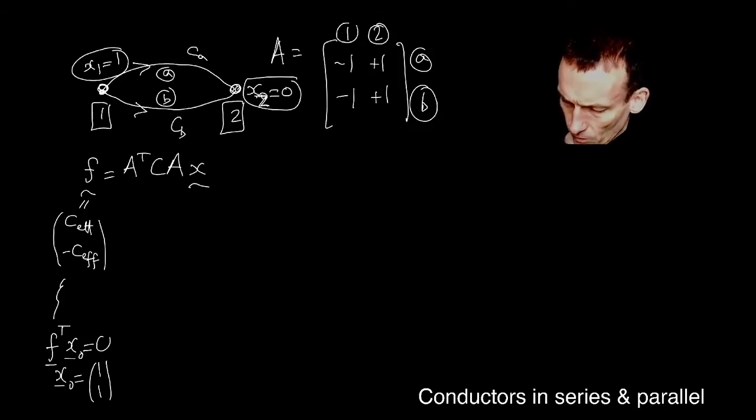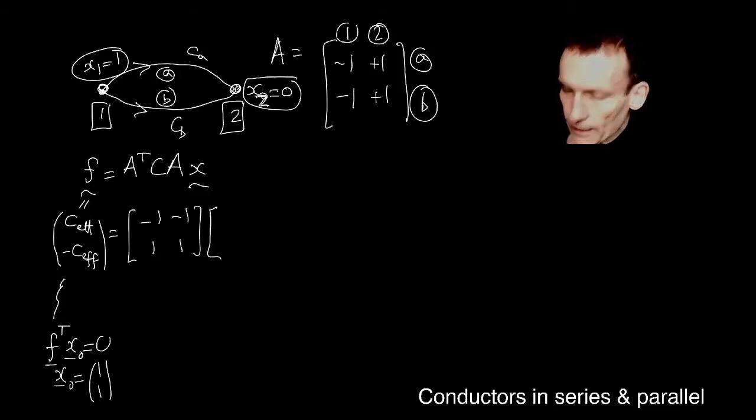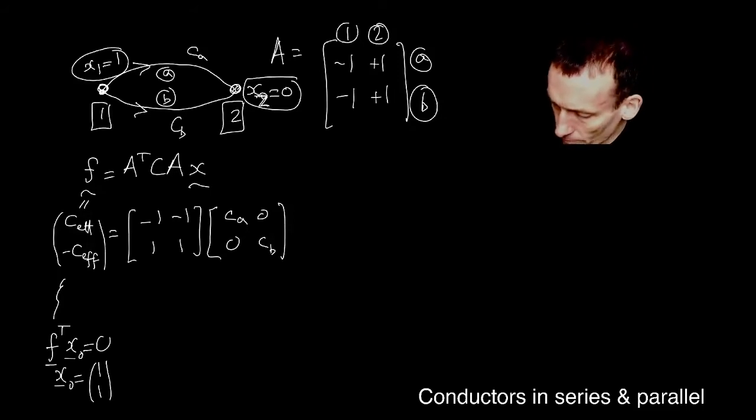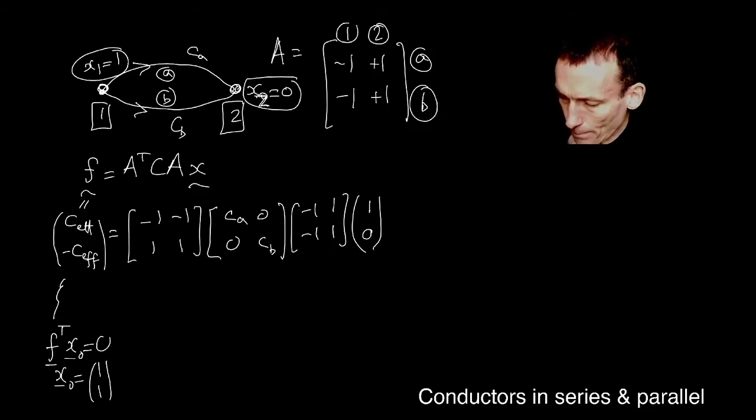Now, what's this quantity here? Well, I think this is just this, isn't it? And then C is this conductance matrix that I just introduced. And in this case, of course, it's just a two by two diagonal matrix with these two elements on the diagonal. And then we write down A again. And then X is one zero.